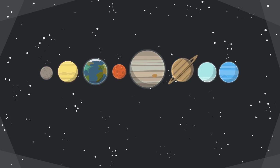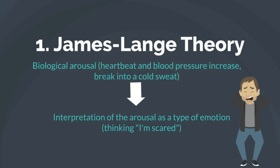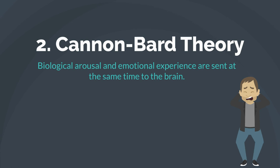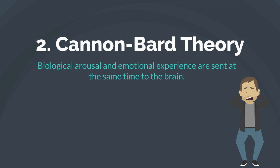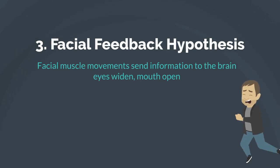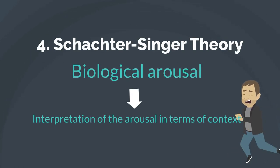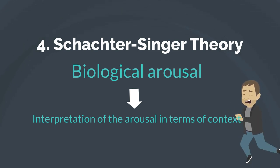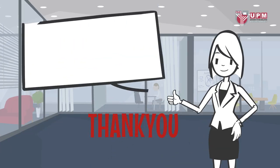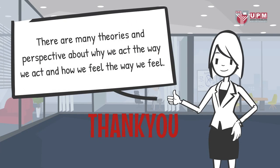Summary of theories of emotion: First, James-Lange theory — biological arousal such as heartbeat and blood pressure increase, breaking into a cold sweat; for example, thinking 'I am scared.' Second, Cannon-Bard theory — biological arousal and emotional experience are sent at the same time to the brain. Third, facial feedback hypothesis — facial muscle movements send information to the brain, such as eyes widening and mouth opening. Fourth, Schachter-Singer theory — biological arousal will be interpreted in terms of the context. There are many theories and perspectives about why we act the way we act and how we feel.